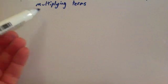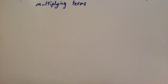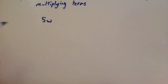This video is on multiplying algebraic terms. Before you watch this video, I'd recommend watching two videos. One of them is on algebraic notation, which explains what something like 5w means — that means 5 times w.